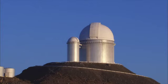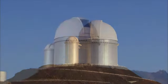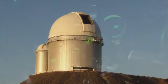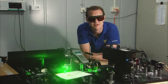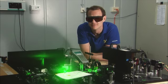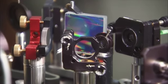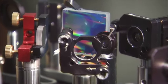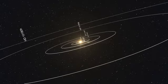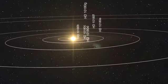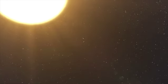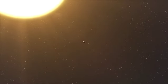ESO's venerable 3.6-metre telescope is also hunting for exoplanets. The HARPS spectrograph is the most accurate in the world. So far, it's discovered more than 150 planets. Its biggest trophy: a rich system containing at least five, and maybe as many as seven, alien worlds.